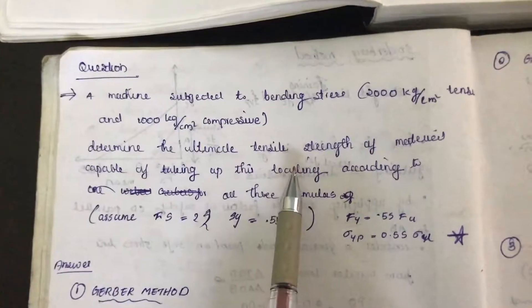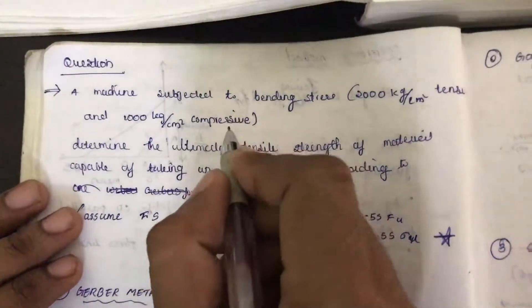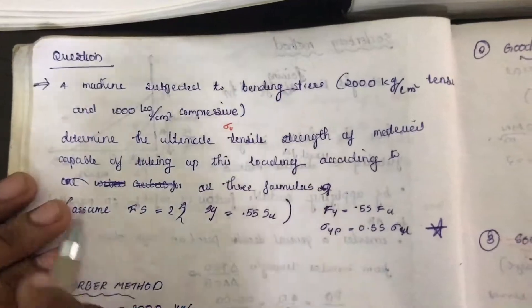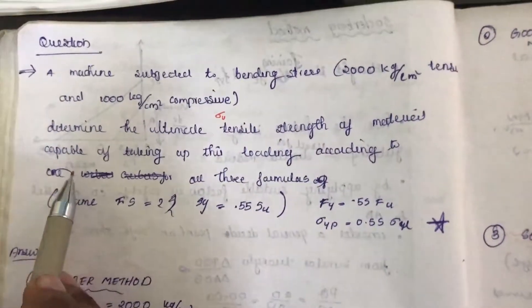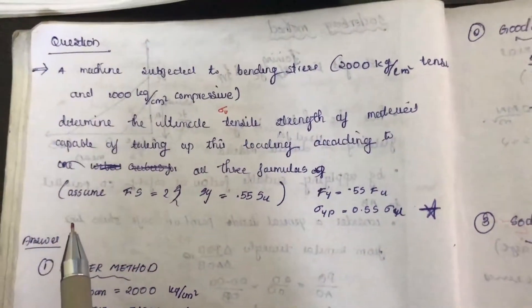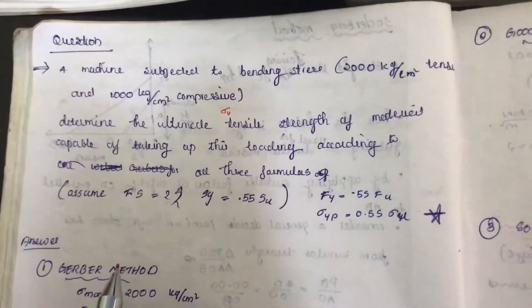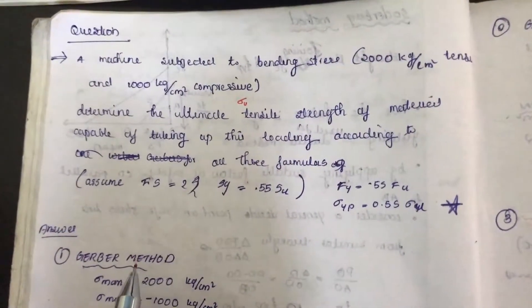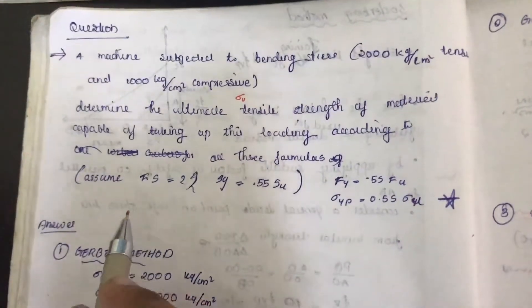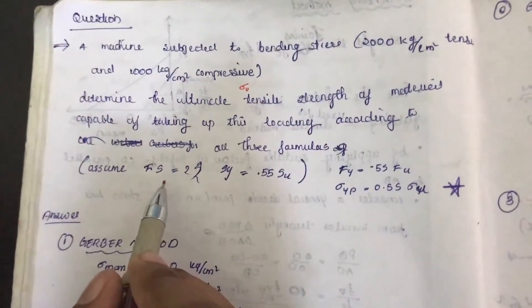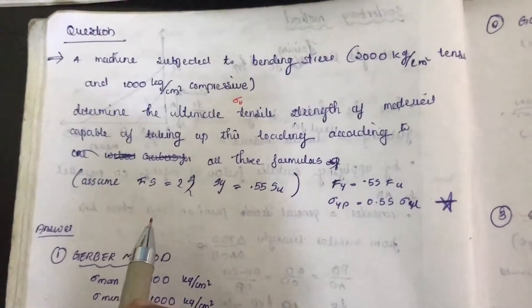Determine the ultimate tensile strength, sigma u. Sigma u is what we have to find. If anything about sigma yp and sigma u are not given, then factor of safety should be assumed to be 2 if not given.